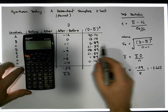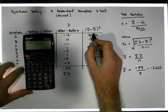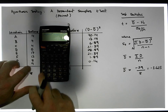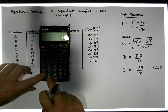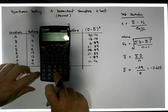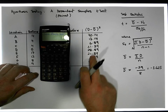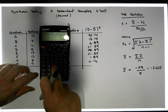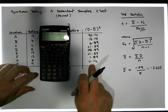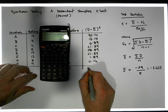Now what we need to do is find the sum of the squared differences, so I need to sum up this column. We have 70.14 plus 13.14 plus 6.89 plus 21.39 plus 28.89 plus 21.39 plus 1.89 plus 0.14, which gives us a summation of approximately 163.87.